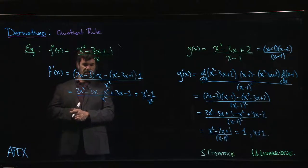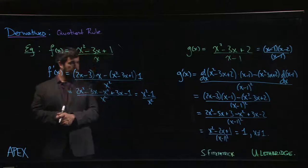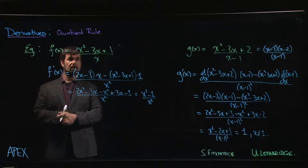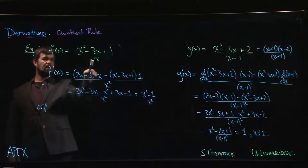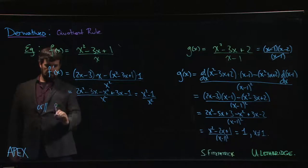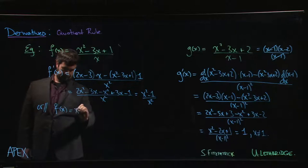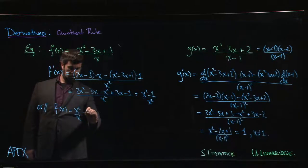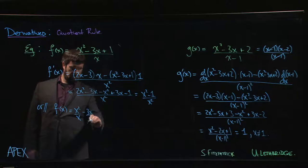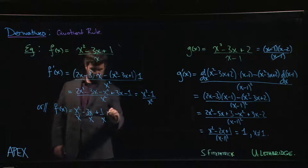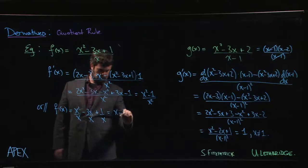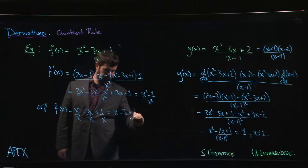What else can we do? We could simplify first. What happens if we simplify first? Well, that x on the bottom, I can divide term by term by x. So I can say f of x is x squared over x minus 3x over x plus 1 over x, which is x minus 3 plus 1 over x.